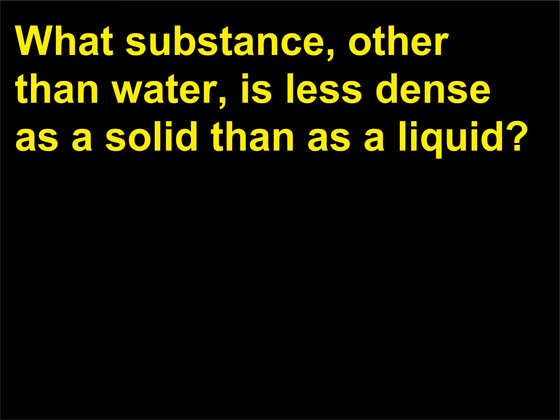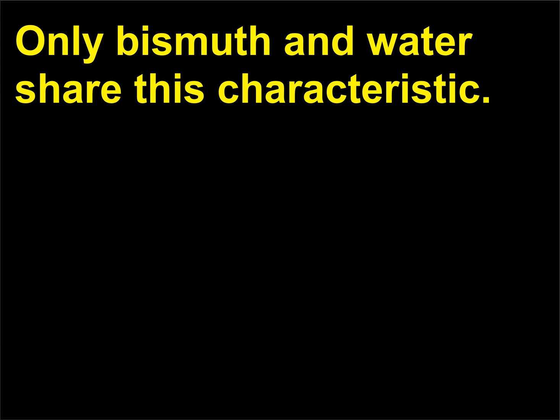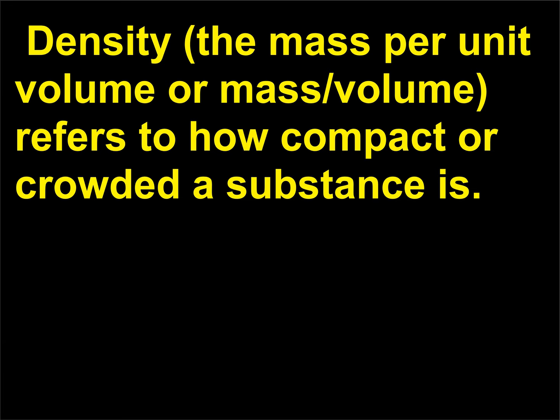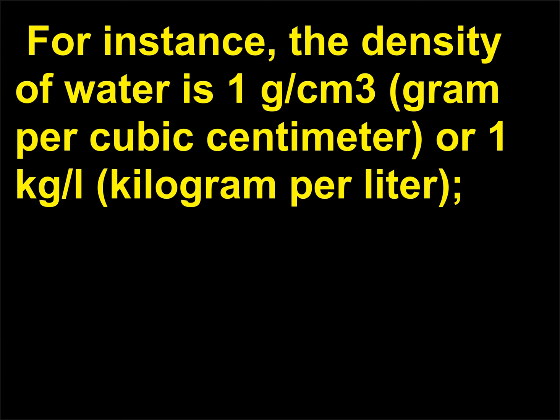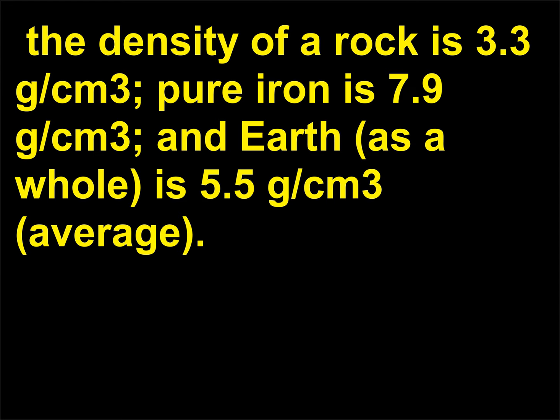What substance, other than water, is less dense as a solid than as a liquid? Only bismuth and water share this characteristic. Density — the mass per unit volume — refers to how compact or crowded a substance is. For instance, the density of water is 1 g/cm³; a rock is 3.3 g/cm³; pure iron is 7.9 g/cm³; and Earth as a whole averages 5.5 g/cm³. Water as a solid (ice) floats because its solid form is less dense than its liquid form.